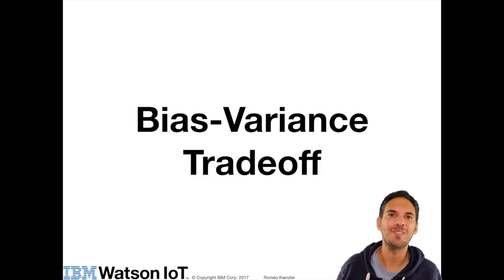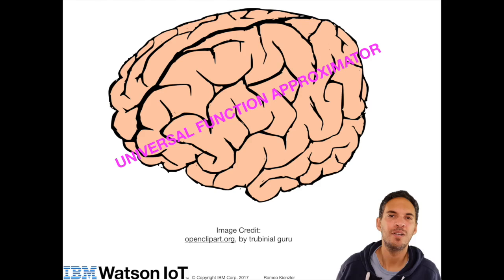In this video, I'll tell you something about bias-variance tradeoff and how you can prevent overfitting of a neural network. A neural network is a universal function approximator.